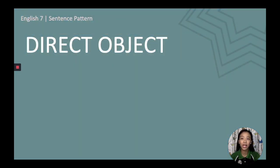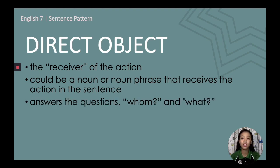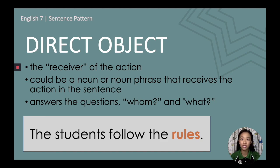The last part of the S-TV-DO sentence pattern is the direct object. A direct object is the receiver of the action — a noun or noun phrase that receives the action in the sentence. It answers the questions 'whom' and 'what.' In 'The students follow the rules,' the direct object is 'the rules,' answering the question: what do the students follow?